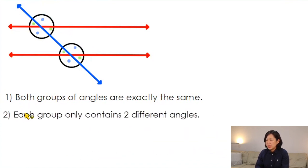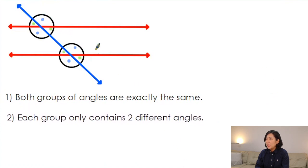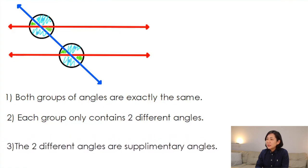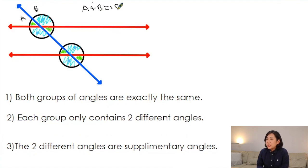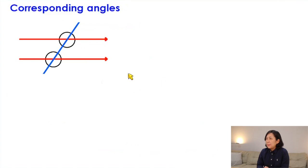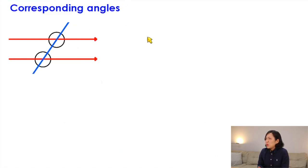Each group only contains two different angles: the smaller green angles and the greater blue angles. The two different angles — green and blue — are supplementary angles. They add up to 180 degrees, just like angles on a straight line. So if the green angle is A and the blue angle is B, then A plus B always equals 180. Based on these observations, I'm going to introduce four important rules about angles in parallel lines.